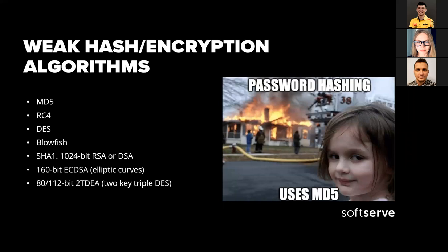The next issue is weak hash or encryption algorithms. You can see examples of algorithms you shouldn't use in your code — this list comes from the OWASP Top 10. They cover data leak issues and each time they update the information. If you're not sure what algorithm to use, just check the OWASP Top 10 to discover which algorithm you should use.